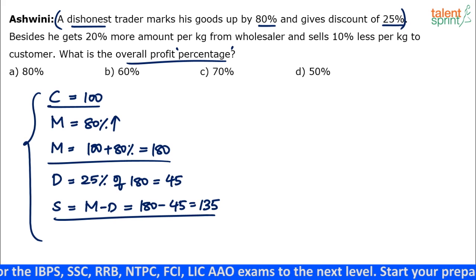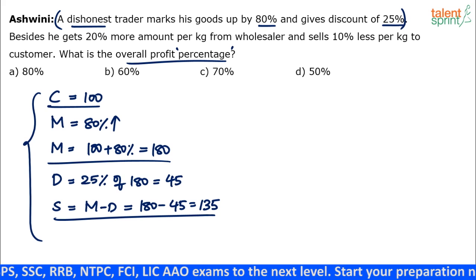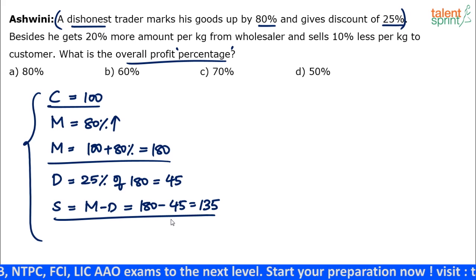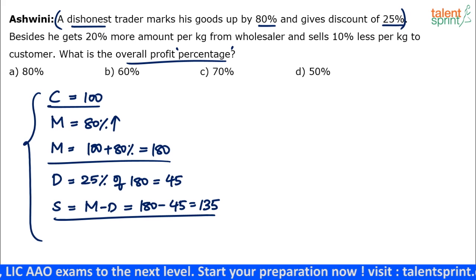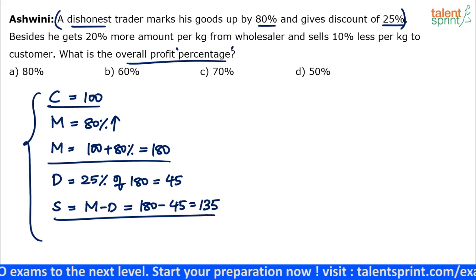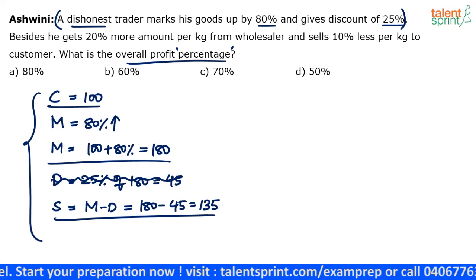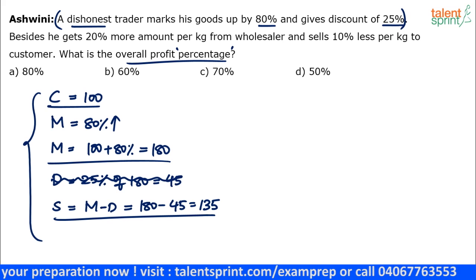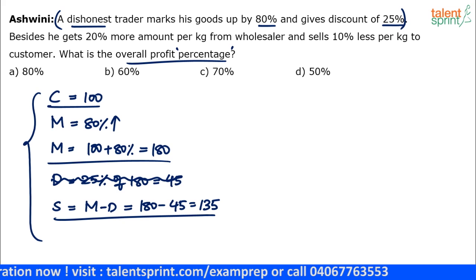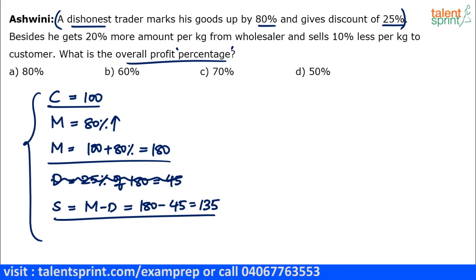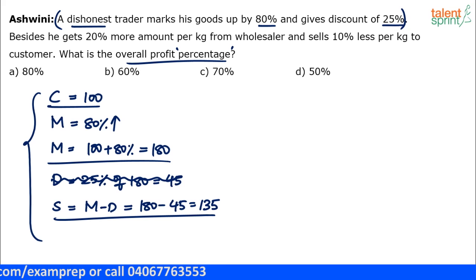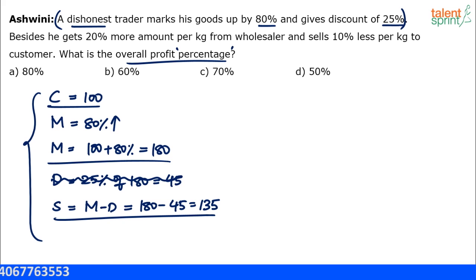You should do this calculation mentally. Cost price is 100, mark price will be 180, and selling price will be 75 percent of 180. No need to calculate the discount separately — if the discount is 25 percent, selling price is 75 percent of the mark price. If discount is 10 percent, selling price is 90 percent; if 12 percent, it's 88 percent. So 75 percent of 180 is 135. Be quick with your calculations — that's where most people waste precious time.